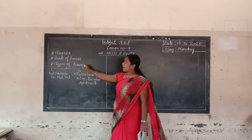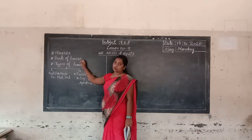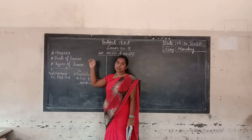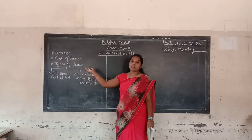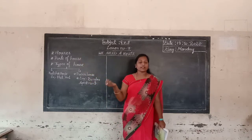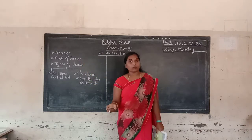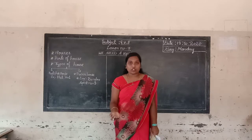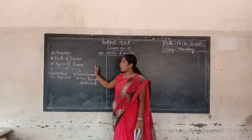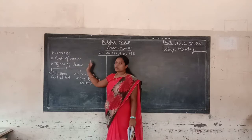Now let's look at the parts of the house. The parts of the house are: living room, dining room, kitchen, bedroom, and bathroom. These are the main parts of the house.